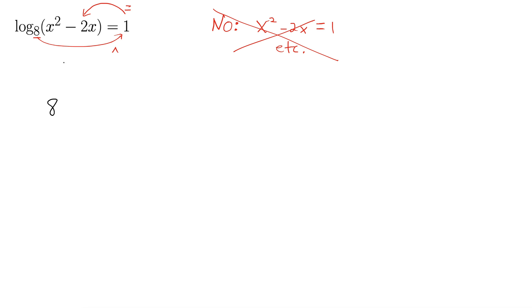We take the base, 8, around for the exponent to the 1, back inside for the equals, x squared minus 2x. And now this is starting to look like an equation. Anytime you see an x squared, you should think that a 0 would be a good thing to have on the other side of the equals. So let's do that. So we have x squared minus 2x minus 8 equals 0.